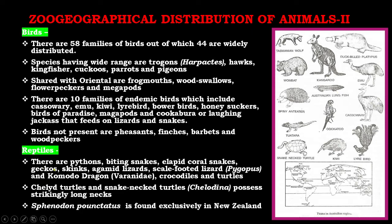Reptiles are represented by pythons, biting snakes, elapid coral snakes, geckos, skinks, agamid lizards, scale lizards (Pygopus), Komodo dragon belonging to family Varanidae, crocodiles, and turtles — including chelid turtles and snake-necked turtles. The chelid turtles possess strikingly long necks. There is also Sphenodon punctatus, which is a living fossil found exclusively in New Zealand.